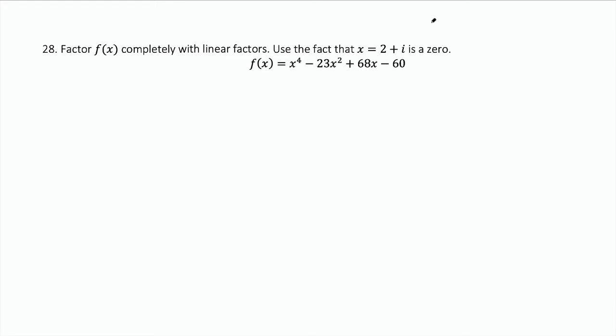Because 2 plus i is a zero, we know that its complex conjugate is as well, 2 minus i. So that tells us two different factors. We have x minus 2 plus i and x minus 2 minus i as factors.